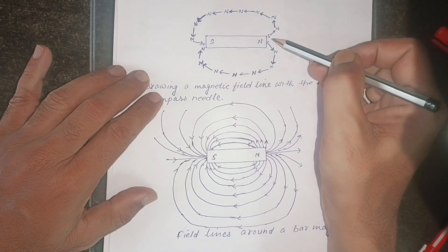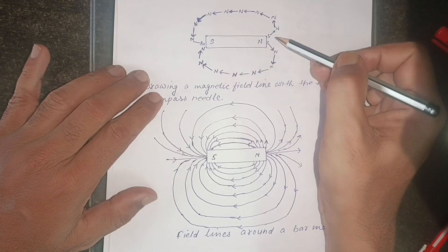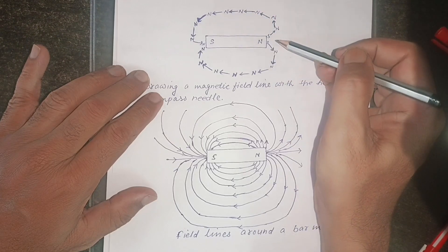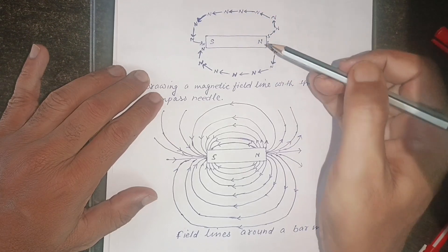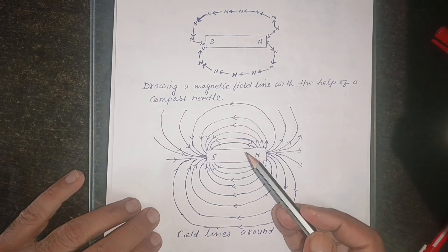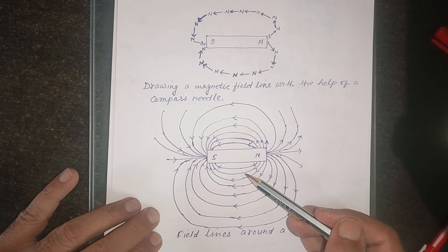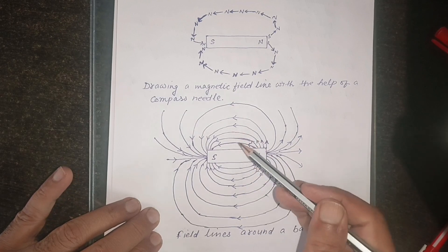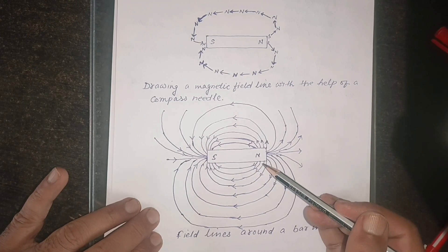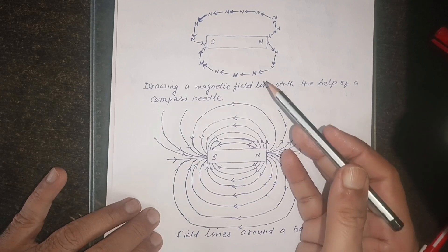This procedure will be repeated many times and at last we will get a number of field lines as shown in the figure. These field lines will represent magnetic field around bar magnet. Thus, we can draw magnetic field lines with the help of compass needle.